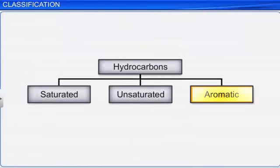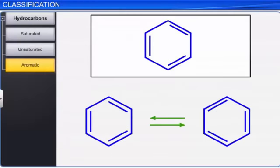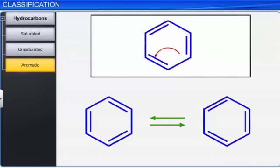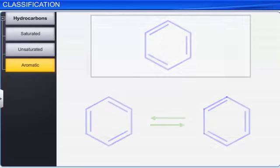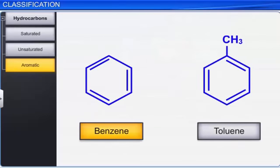Aromatic hydrocarbons are cyclic hydrocarbons with alternating double bonds in conjugation. Aromatic compounds are benzene and the compounds that resemble benzene in their chemical behavior. For example, benzene, toluene, etc.